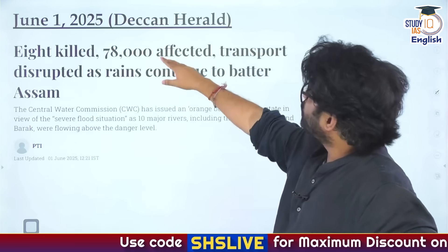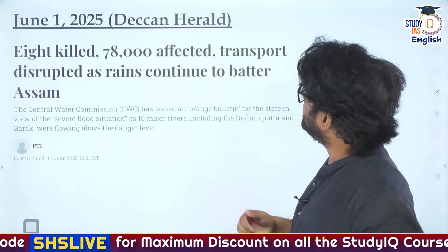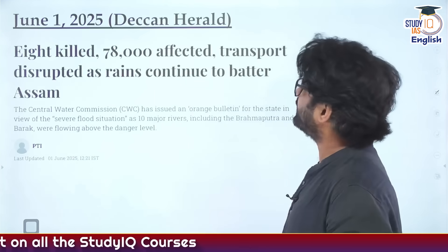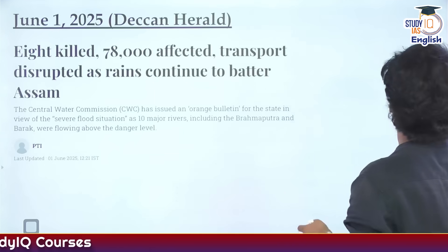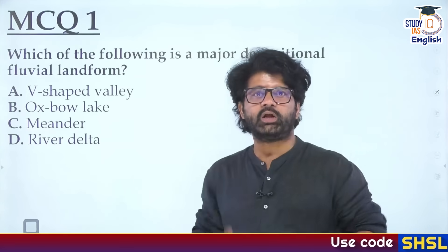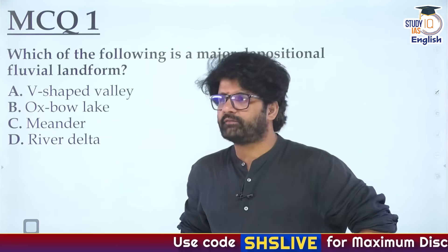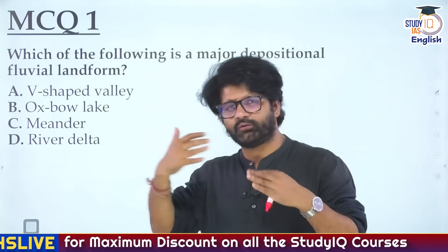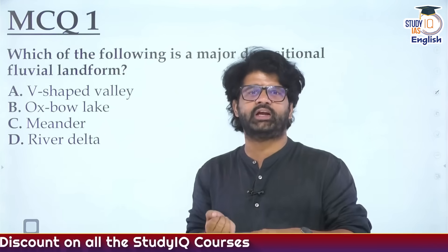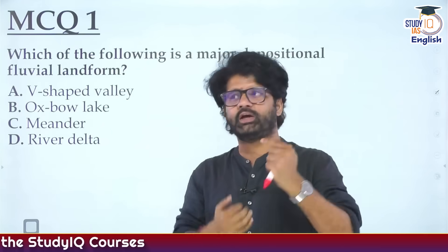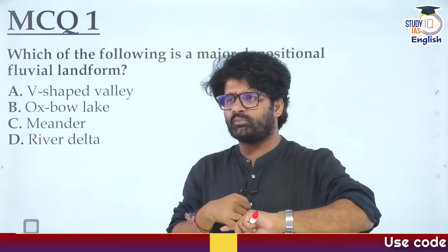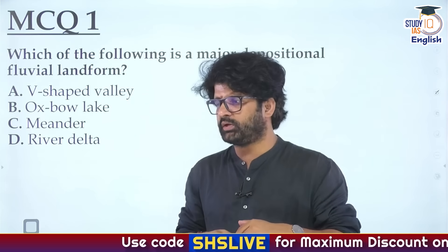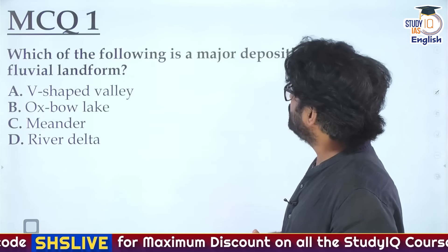June 1, 2025 - Deccan Herald: this was the news, 8 killed, 78,000 affected. You can see how much Assam is suffering right now. We are with Assam and we want to do something - that's why we are having this discussion, so that the government can realize this is a grave issue. This cannot go on year after year - this recurring harrowing experience is not helping the people of Assam.